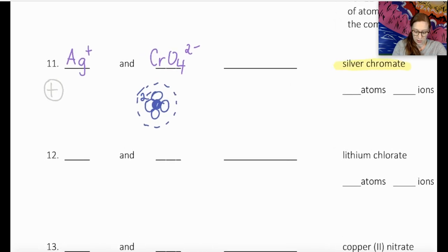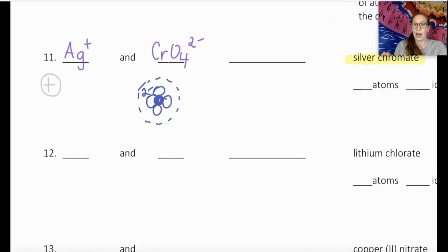And then that whole thing is going to have a charge of minus two. Let me zoom that in a little bit more. Right now, negative two with one positive charge is not neutral. That's going to have a charge of minus one. So I want to add in another positive charge from my silver to make this whole thing neutral.